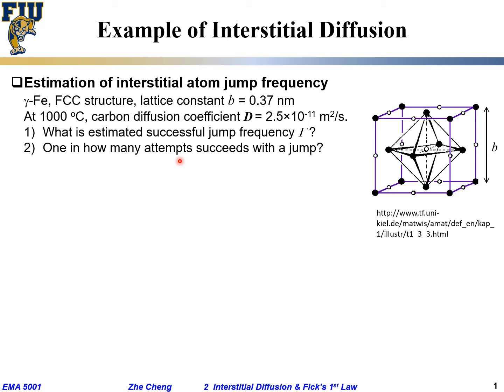To do that, let's think. We know the lattice constant, we know the diffusion coefficient. What's the solution? Jumping distance. What is our jumping distance? What is α? We are giving you lattice constant. Is this the jumping distance? Where do the so-called interstitial atoms sit?